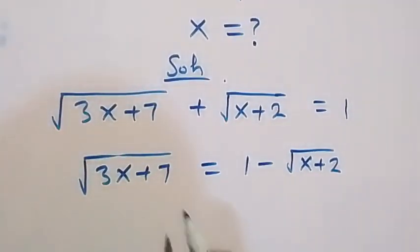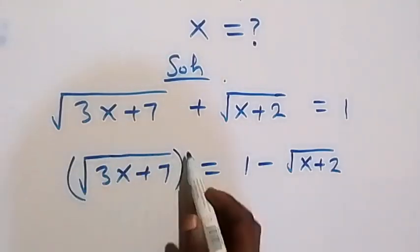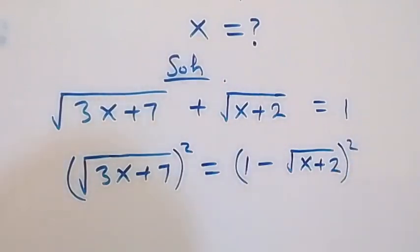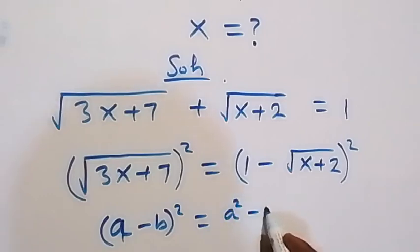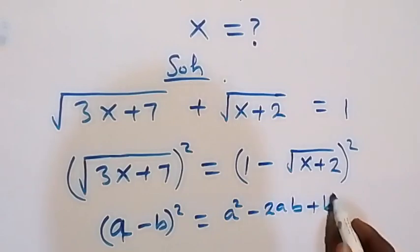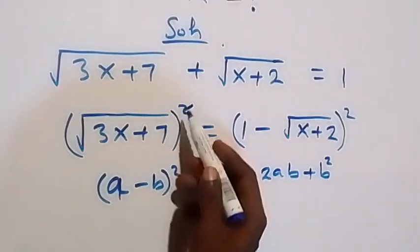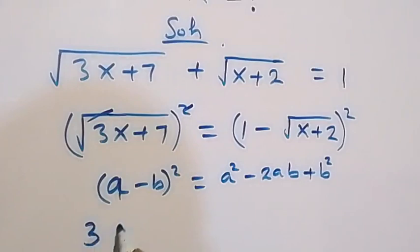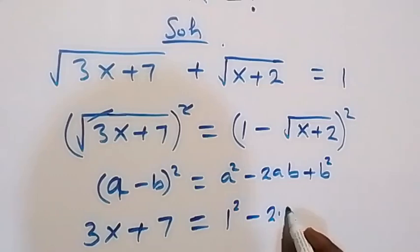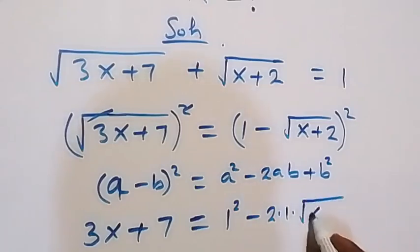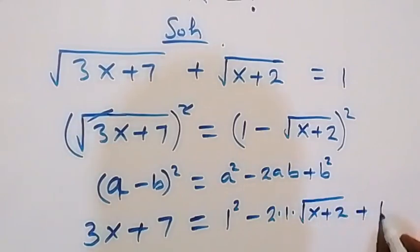Then from this step, let's square both sides. When we square both sides, the right side follows the identity (a minus b) squared equals a squared minus 2ab plus b squared. The square cancels the square root on the left, giving us 3x plus 7 equals 1 squared minus 2 times 1 times square root of x plus 2, plus square root of x plus 2, all squared.